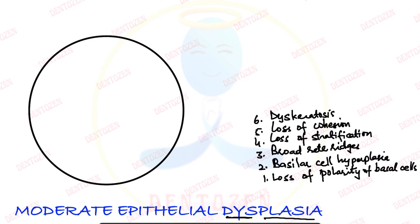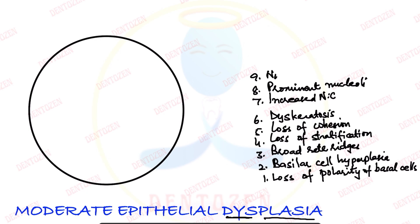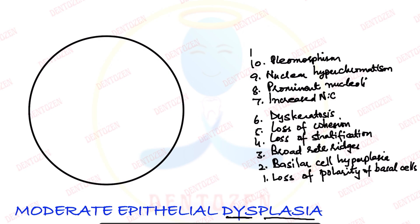Now let's see the features of cytological atypia. There is increased nuclear content, so there is an increased nuclear-cytoplasmic ratio. The nucleoli become prominent. Some nuclei may take an excessively deep color — that is nuclear hyperchromatism, where hyper means more and chroma means color. These cells and nuclei may show different sizes and shapes, which is cellular and nuclear pleomorphism. There is also an increased number of mitotic figures, presence of mitotic figures in superficial layers known as superficial mitosis, and presence of atypical mitotic figures, also known as abnormal mitosis.